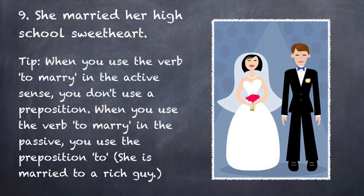Sentence number nine: She married her high school sweetheart. Another case where no preposition is needed. When you use the verb 'to marry' in the active sense, as in this sentence, you don't use a preposition. However, when you use the verb 'to marry' in the passive, you use the preposition 'to' — she is married to a rich guy, or she is married to her high school sweetheart.